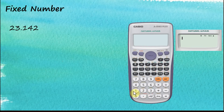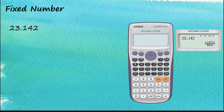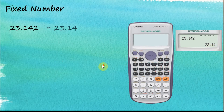Let's key in the number 23.1442 and press equal. The answer is given in fractions. To change this to a decimal number, click the S↔D button. Now we can see the answer is given in two decimal places.